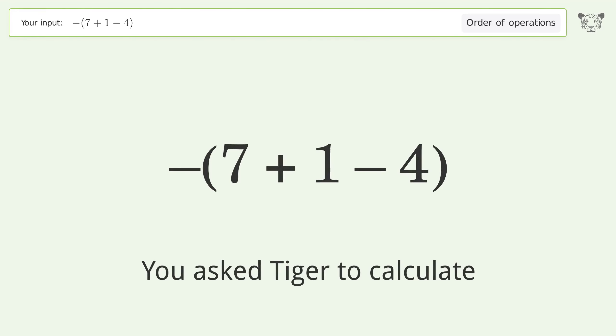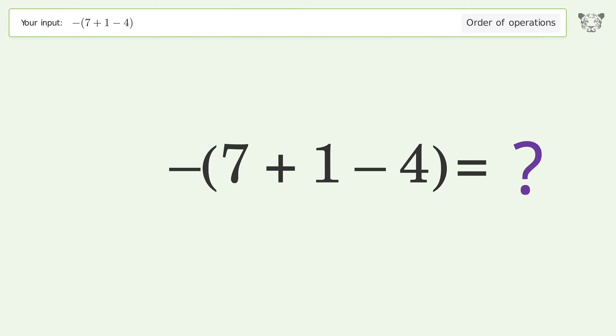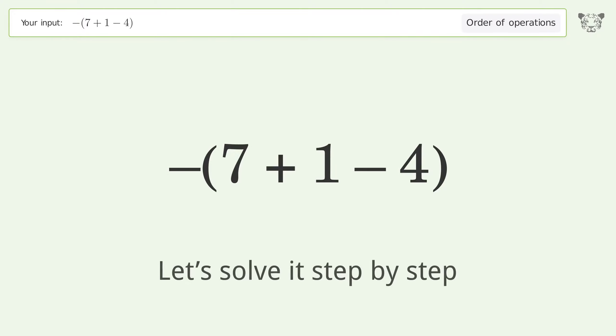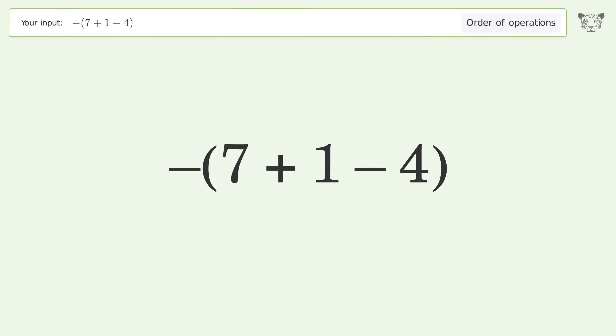You asked Tiger to calculate. This deals with the order of operations — the final result is negative 4. Let's solve it step by step.